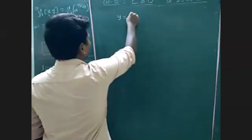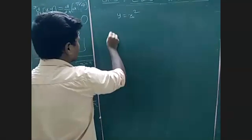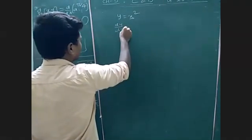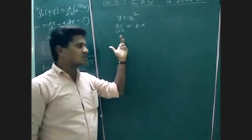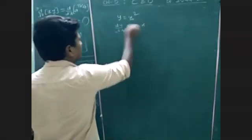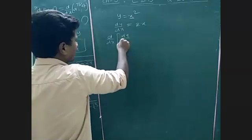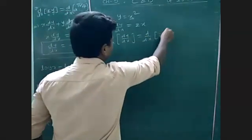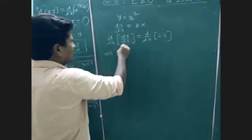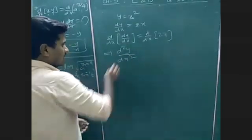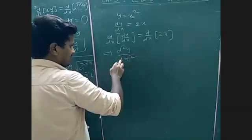I am taking y = x². Now I want to differentiate it with respect to x. How to write dy/dx? x² derivative is 2x. Again I want to differentiate. Both sides differentiate with respect to x: left side already dy/dx, right side d/dx of 2x. So this can be written as d·d — that is d²y/dx². Not dx whole square — the second derivative is written as d²y/dx².